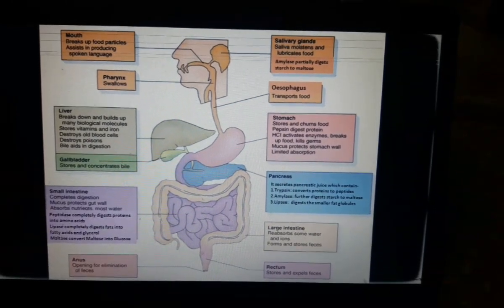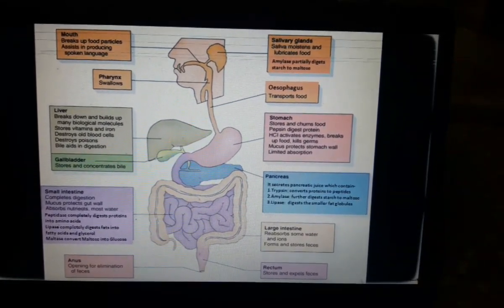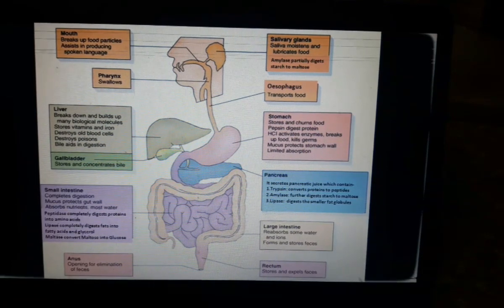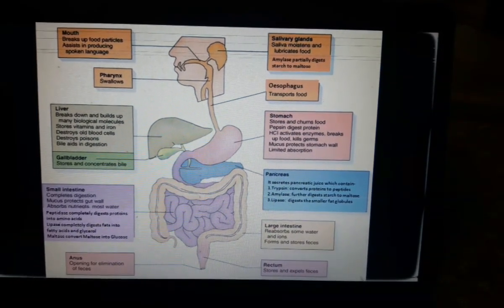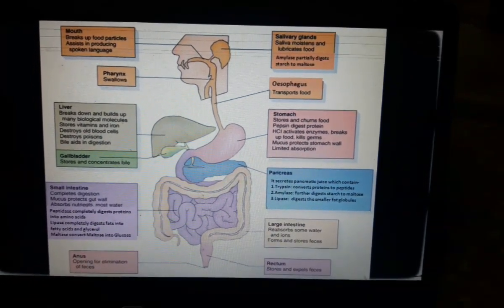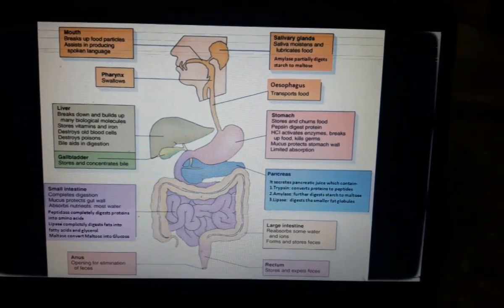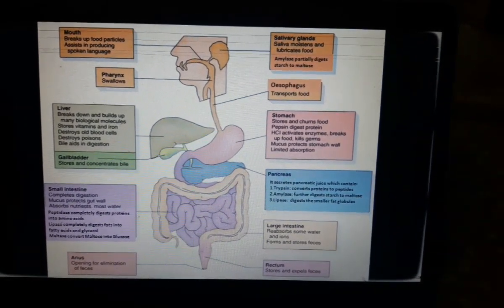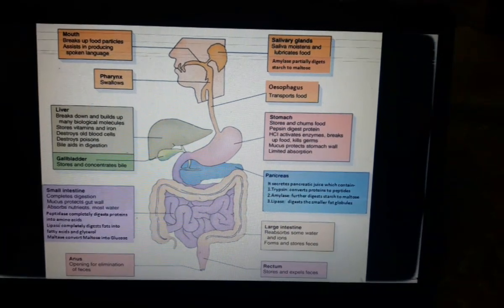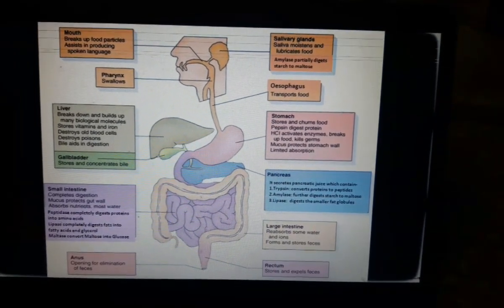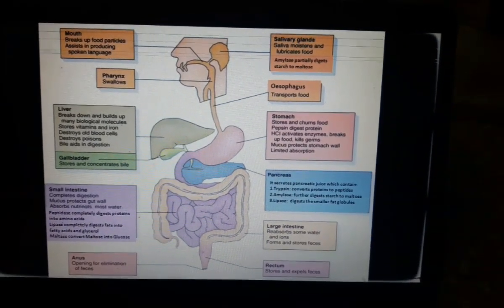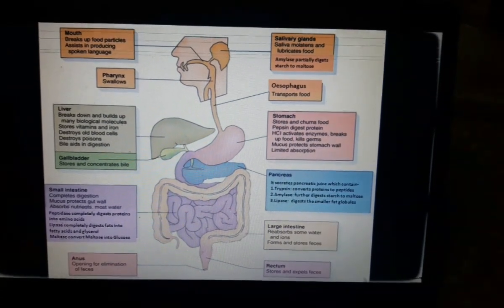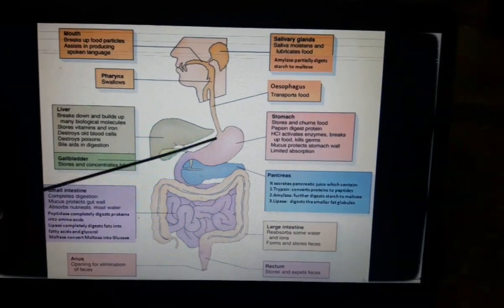These rhythmic waves of contraction are called peristaltic movement or peristalsis. In fact, the peristaltic movements occur in the entire elementary canal which help in smooth movement of food. Food is no longer called food - it is called bolus when it enters the stomach.